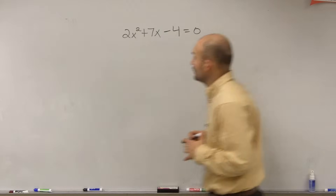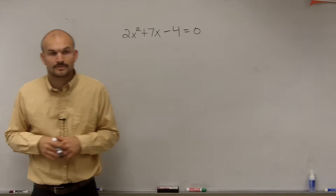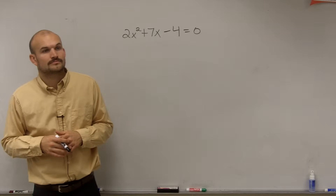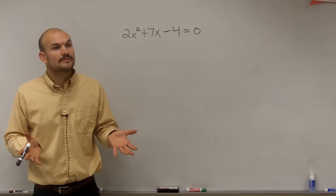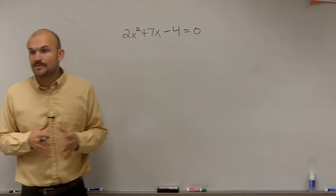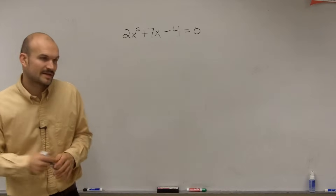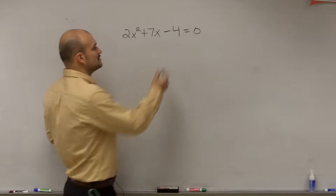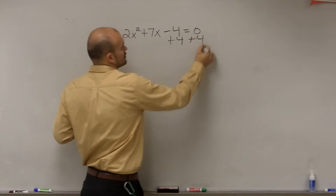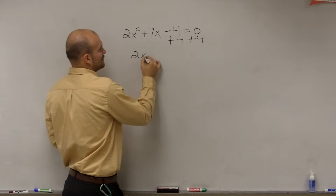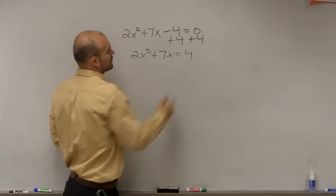So in this problem I have 2x squared plus 7x minus 4. To do this problem we're going to do the same exact thing. We first need to make sure we get the 4 onto the other side so that we can have our variable isolated. So I have 2x squared plus 7x equals 4.